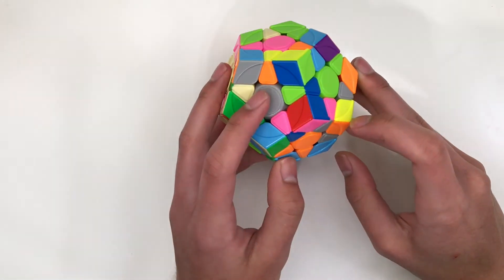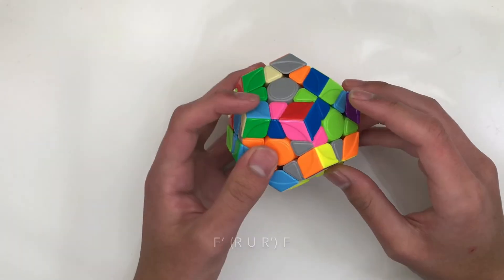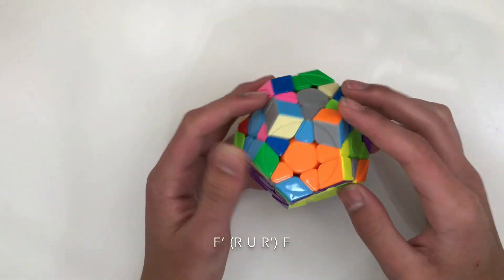So we have these two pieces here and inserting purple right here. Set it up, three mover, go back.